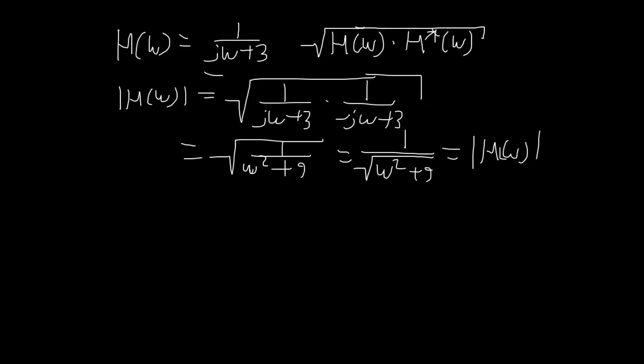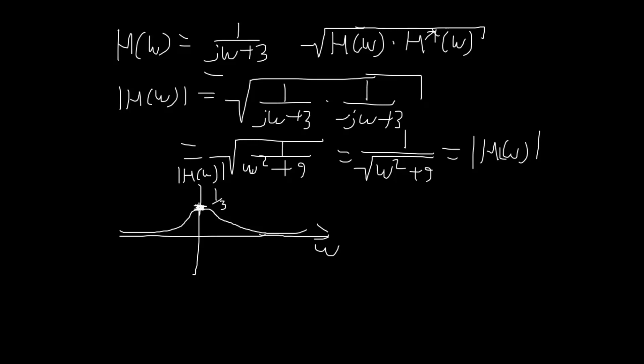Let's graph the magnitude. At omega equals 0, h of omega is 1 over the square root of 9, which is 1 over 3. As omega increases in either the positive or negative direction, the denominator increases, so the magnitude decreases. The graph looks like a hump at 1 third that slowly tapers off toward positive and negative omega.